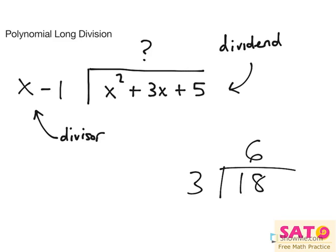And just like this, the 3 would be our divisor, and the 18 would be our dividend, and this question mark would be our 6, which is the quotient. So let's get started here.